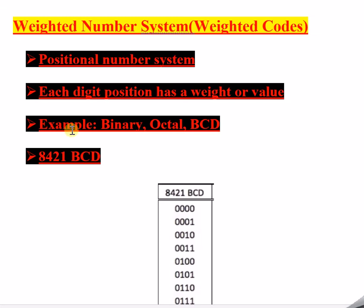Examples of weighted number systems or weighted codes are binary, octal, and BCD. We will further understand this with the help of a BCD example. Weighted number systems are classified into three major types: binary, octal, BCD, and many more. We will take the example of 8421 BCD, which is very popular.